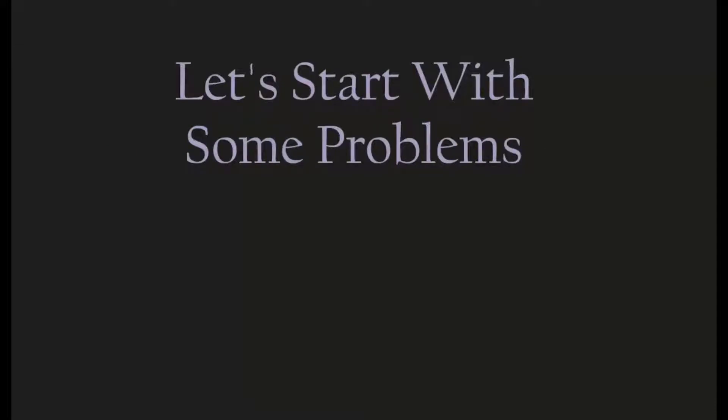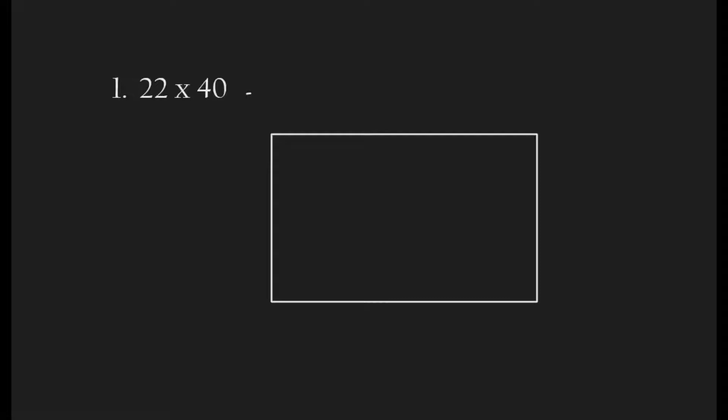Let's start off with me showing you some problems. Our first question is 22 times 40. We have a rectangle here — a box — because we are going to use it. First we are going to separate 22 into 20 and 2. Let's draw a line right here: this part is going to be 20 and this part is going to be 2.